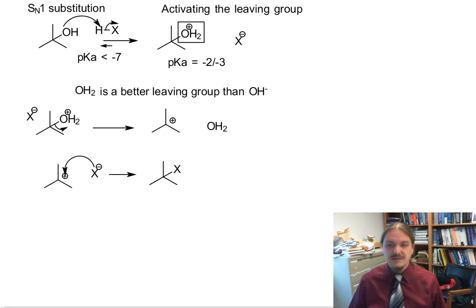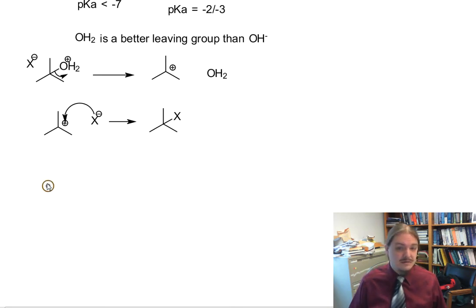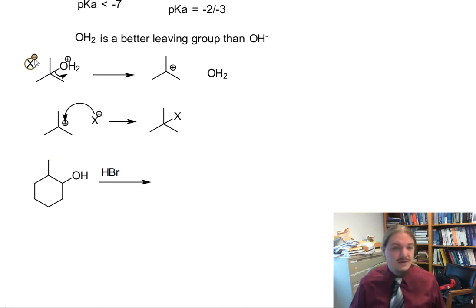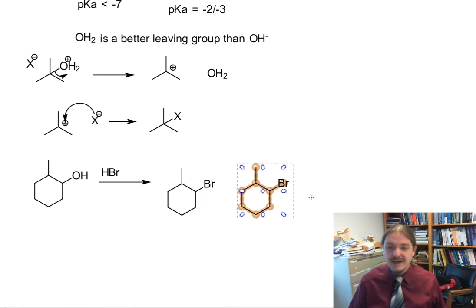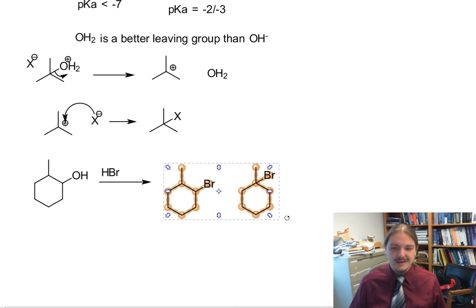This reaction tends to follow an SN1 type mechanism even on secondary substrates. So if you happen to have a molecule that looks like this, and I'm not going to be too specific about stereochemistry at the moment. Let's use HBr to be specific. While you would get some substitution product at the spot where the leaving group was, you would also get some substitution product elsewhere.